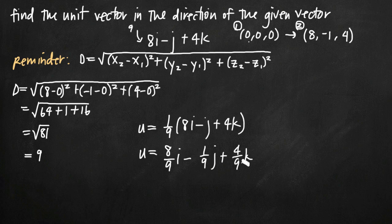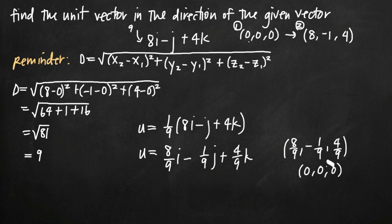You can double-check yourself by using the distance formula to find the distance between the point (8/9, -1/9, 4/9) and the origin (0, 0, 0). You would see that the distance between these two points equals 1, which is the definition of a unit vector. This vector still points in the same direction as our original vector, since we can factor out the one ninth and recover the original. That's how we find a unit vector that points in the same direction but has a length of one unit.